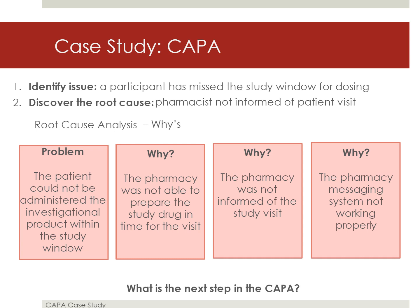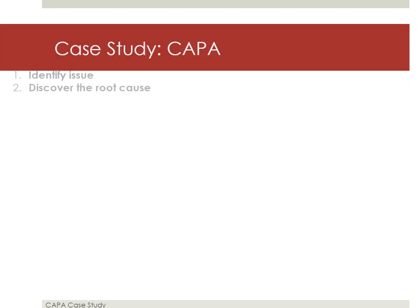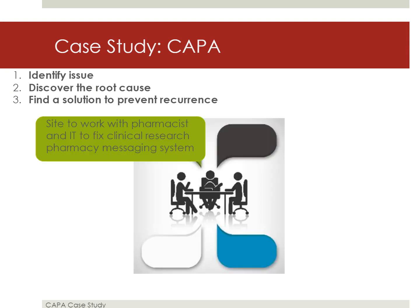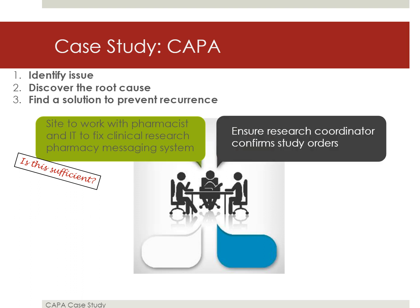What is the next step in the CAPA? The research team will need to find ways to prevent this problem from recurring. For example, the research team can work with the pharmacist and site IT department to fix the clinical research pharmacy messaging system so that it will work properly in the future. But what if you, the monitor, do not think that the proposed solution would be sufficient? You can suggest additional preventive solutions to the research team. For example, having the research coordinator call the pharmacy to confirm the order 24 hours before a participant's study visit.